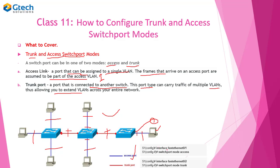To configure a port to be an access port, you first enter that interface — let's say interface FastEthernet 0/1. You type the command 'interface FastEthernet 0/1', hit enter, and as you can see it has changed to interface mode. Then you type the command to enable that port as an access port. The same way you do it for a trunk port.